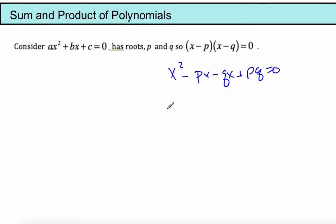From here, I'm going to factor out a negative x, which gives me p plus q plus pq. And I'm even going to go x² - (p + q)x + pq equals zero.